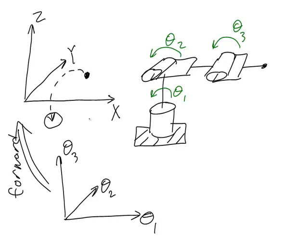And when we transform points the other way from X, Y, Z space to theta 1, theta 2, theta 3 space, we're doing inverse kinematics.